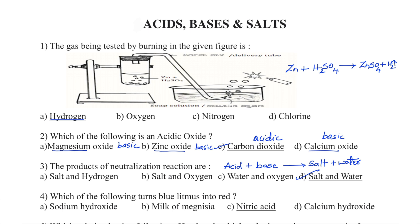Question number 4. Which of the following turns blue litmus into red? Option A — Sodium hydroxide, Option B — Milk of magnesia, Option C — Nitric acid, Option D — Calcium hydroxide. Litmus turning from blue to red means the substance is an acid; turning from red to blue means it is a base. From the given options, we have to identify an acid. The right answer is Option C — Nitric acid. Sodium hydroxide, milk of magnesia (magnesium hydroxide), and calcium hydroxide are all bases; they turn red litmus into blue.